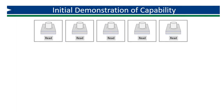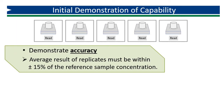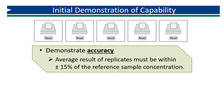When the five replicates have been analyzed, the analyst's accuracy is assessed by calculating the average result for comparison to the expected value. The average result must be within plus or minus 15% of the reference sample concentration.